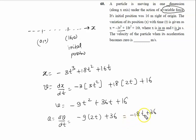When acceleration equals zero, minus 18t plus 36 should be zero. That time is easily calculated as 2 seconds. Put the value of t equal to 2 seconds in the velocity.